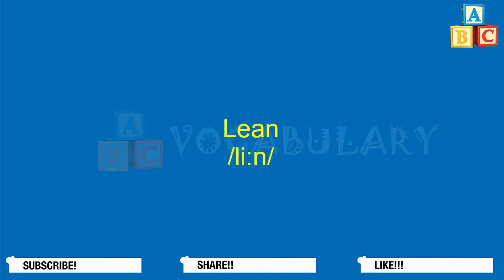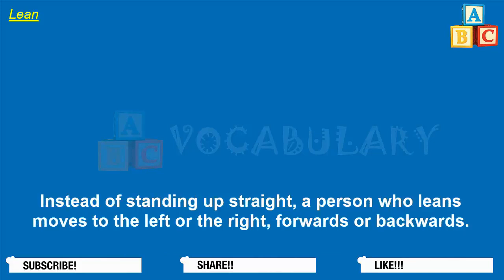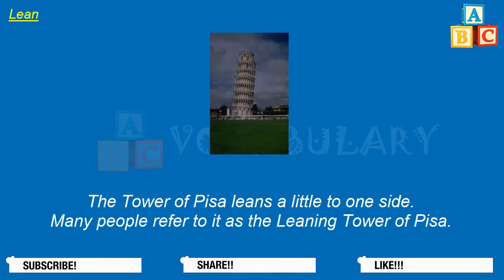Lean. To lean is to shift the weight of a thing or a person onto something else. Instead of standing up straight, a person who leans moves to the left or the right, forwards or backwards. The simple form of this verb is lean, the past tense is leaned, and the past participle is leaned. The Tower of Pisa leans a little to one side — many people refer to it as the Leaning Tower of Pisa.